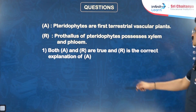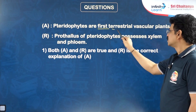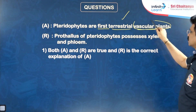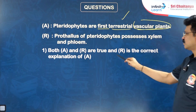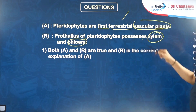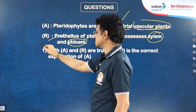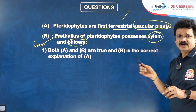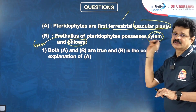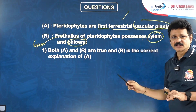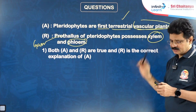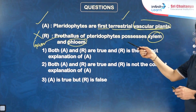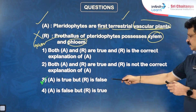Next question: Pteridophytes are the first terrestrial vascular plants — true. Reason: Vascular tissues — xylem and phloem — are absent in prothallus. This reason is false because vascular tissues being absent in prothallus (gametophyte) is true for all vascular plants — pteridophytes, gymnosperms, and angiosperms — not specific to pteridophytes alone. Vascular tissues are found only in the sporophytic stage of all tracheophytes. So Assertion true, Reason false — third option.